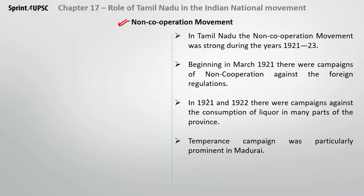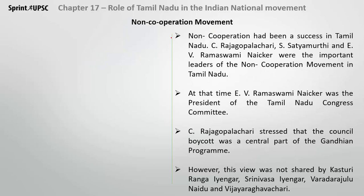Non-Cooperation Movement in Tamil Nadu: the movement was very strong during 1921-23. There were campaigns against foreign goods and liquor consumption, among other issues. The temperance campaign was particularly prominent in Madurai. The success of the Non-Cooperation Movement in Tamil Nadu was because of leaders like C. Rajagopalachari, S. Satyamurti, and E.V. Ramasamy Naicker — the important leaders of NCM in Tamil Nadu.